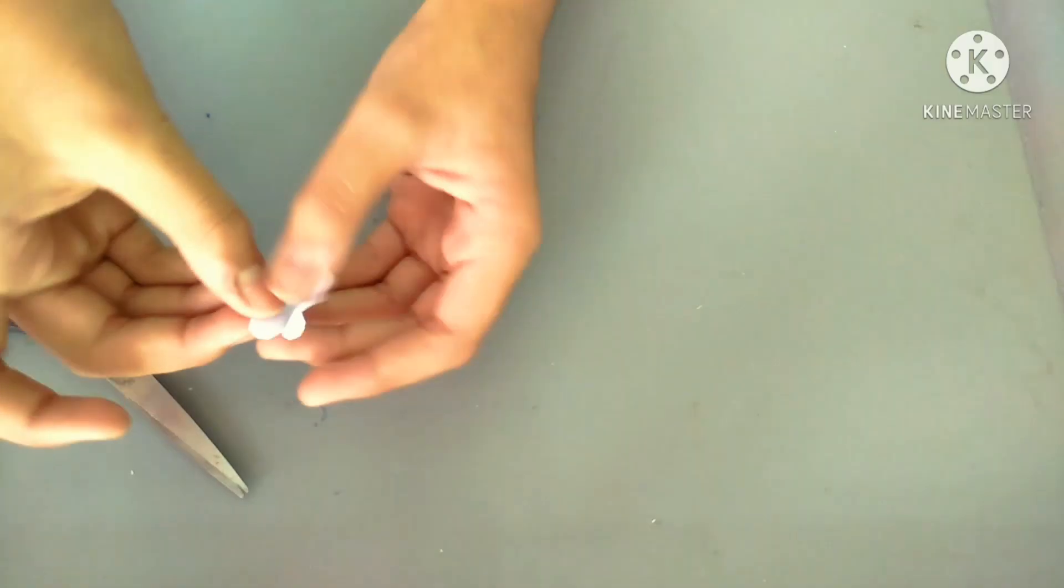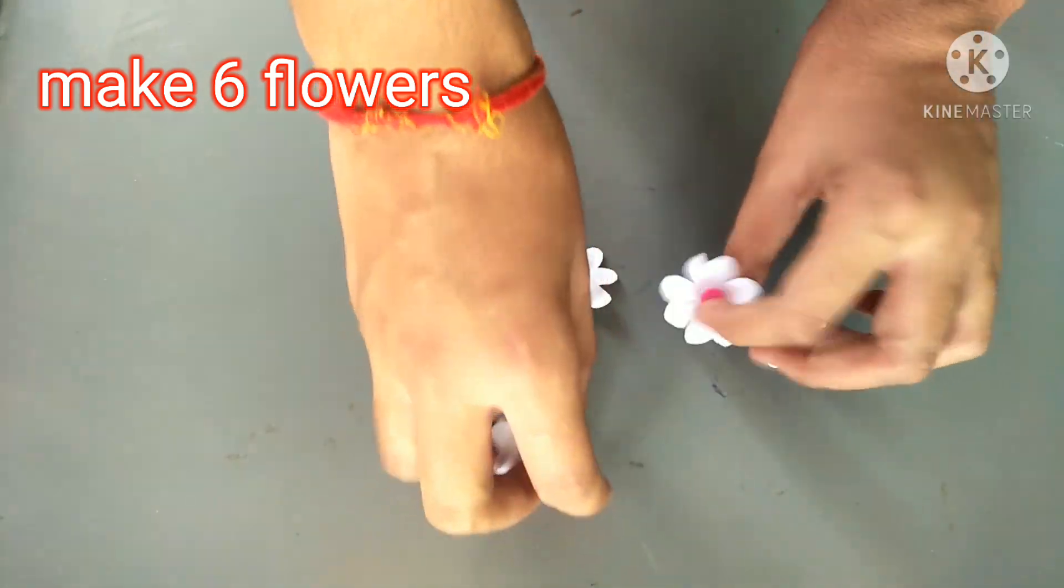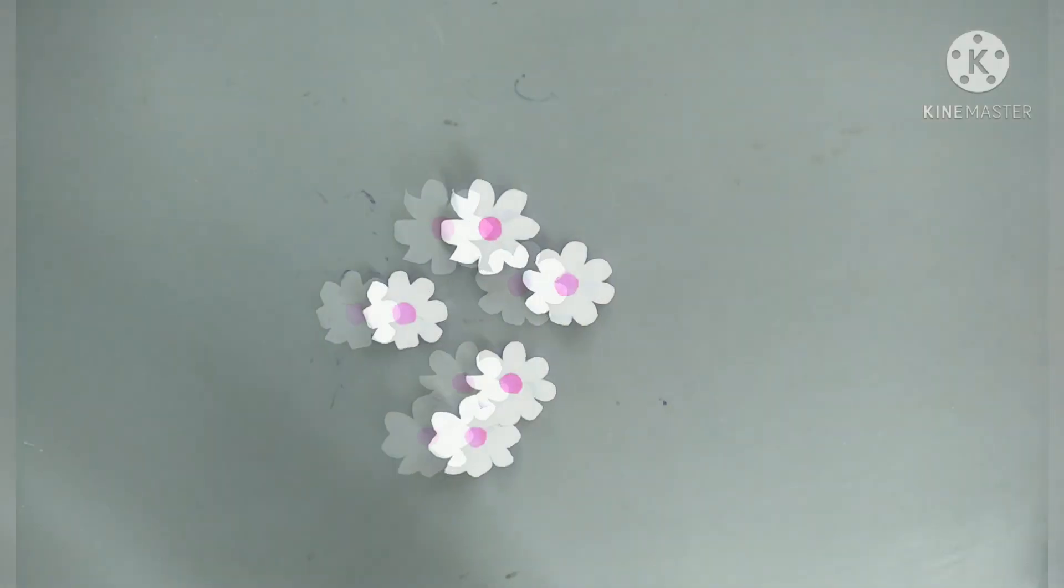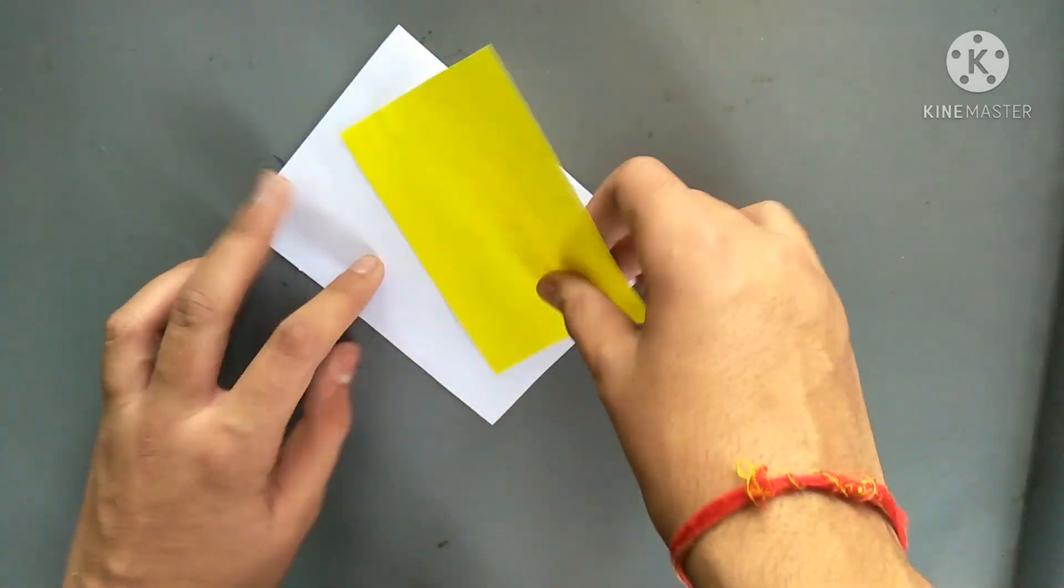Now take a pen and push it up with your hands so that it will finish like 3D flowers. Look at the flowers. You have to make six to seven flowers like this.